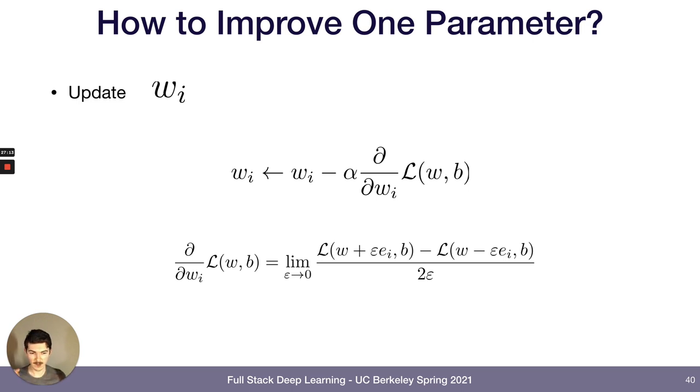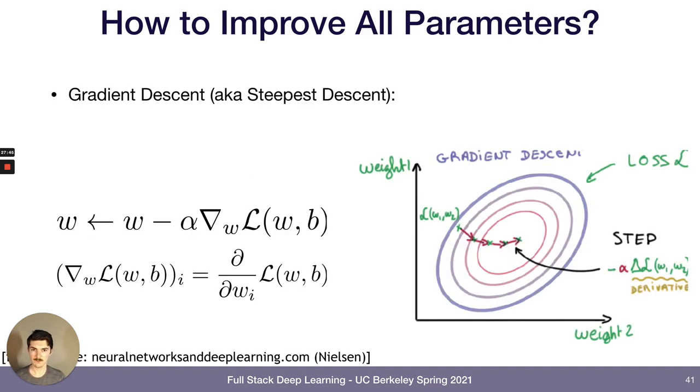So we have some random parameters. We evaluate them on the data that we observed. We can compute the loss function. And then in order to improve the fit of the neural net to the data, we will update each weight by doing this. We'll just subtract the gradient of the loss function with respect to that weight, multiplied by some learning rate. That's all there is to it.